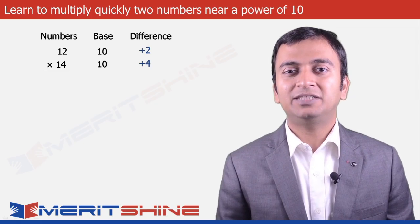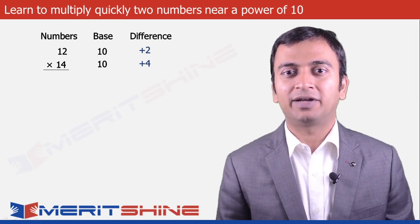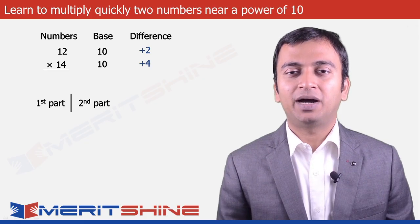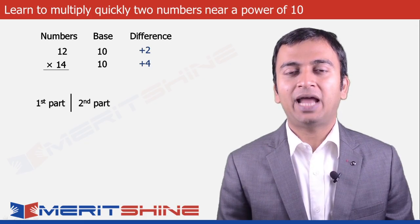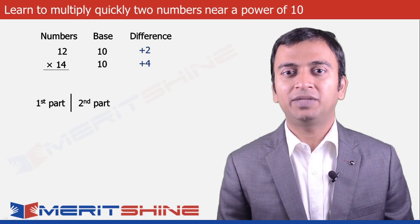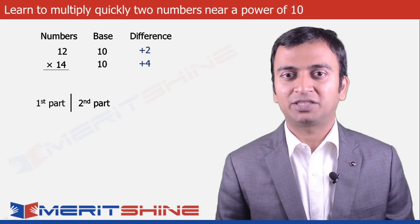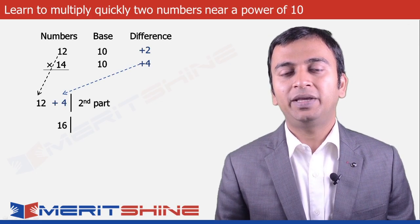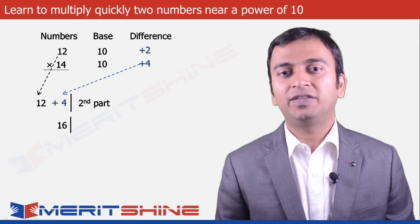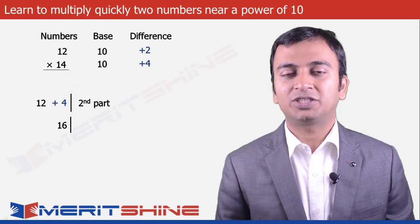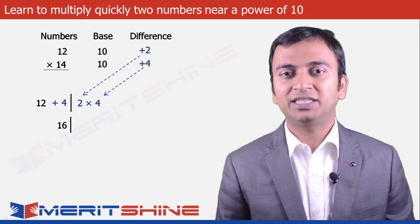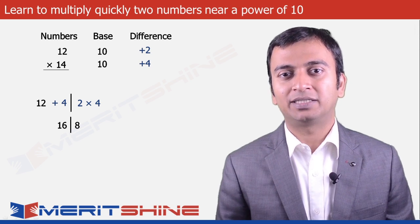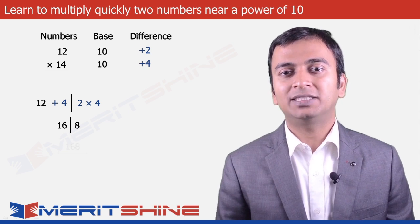Having determined the differences, we can now proceed to write down our answer which would be in two parts. The first part would be the first number added to the difference obtained from the second part, which is plus 4. So 12 plus 4 is 16. The second part would be the product of the differences, which is plus 2 into plus 4, which gives us 8. We can write down our final answer by clubbing these two parts, which is 168.